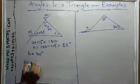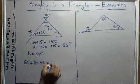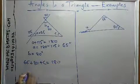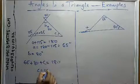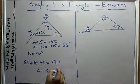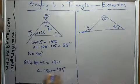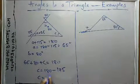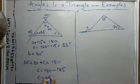So it means 65 plus 80 plus C gives you 180. So C gives you 180 minus 145. So C gives you what? C gives you 35 degree.